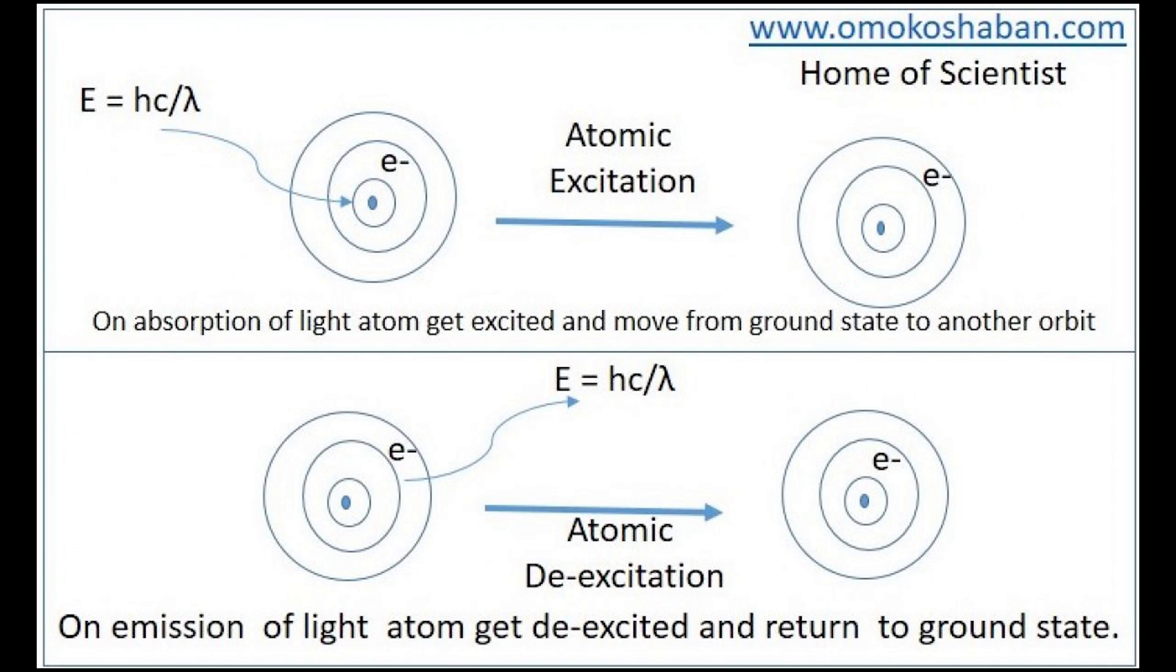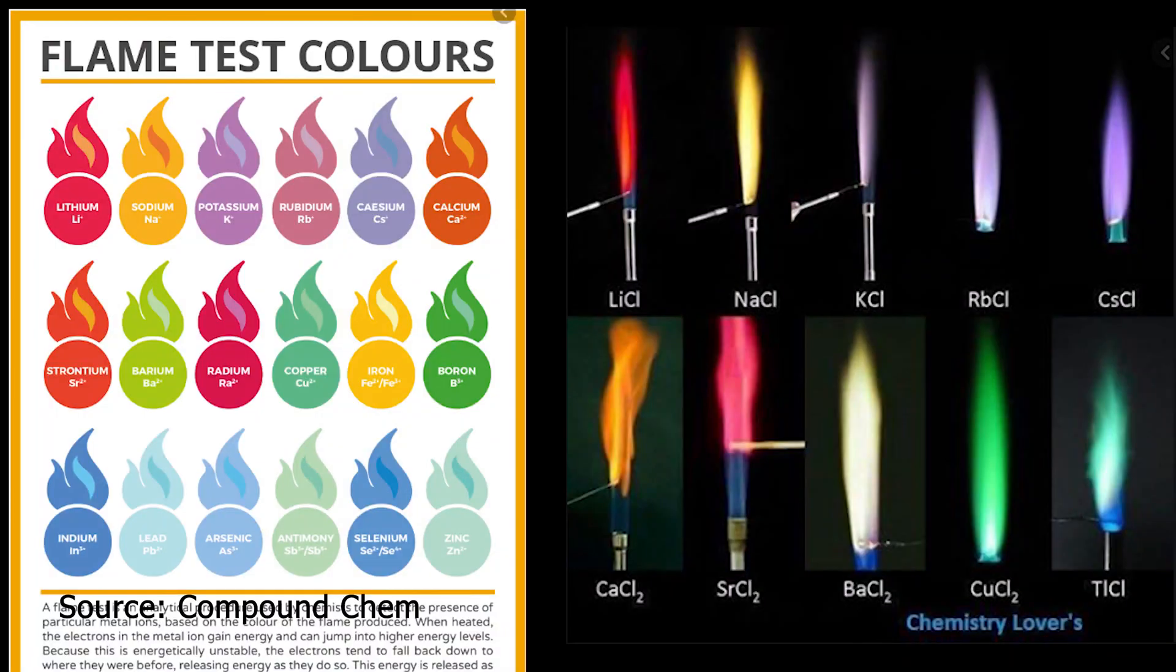When atoms of a gas or vapor are excited, for instance by heating or applying an electrical field, their electrons are able to move from their ground state to higher energy levels. As they return to their ground state, following a clearly defined path according to quantum probabilities, they emit photons of very specific energy. This energy corresponds to particular wavelengths of light, and so produces particular colors of light.